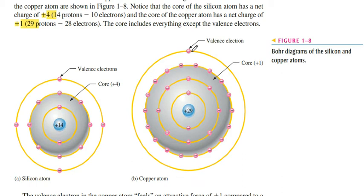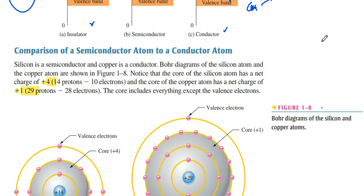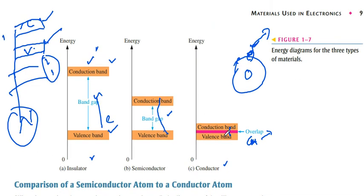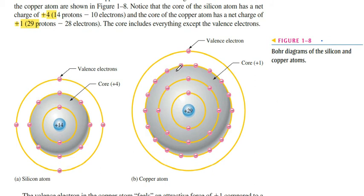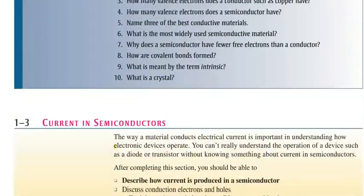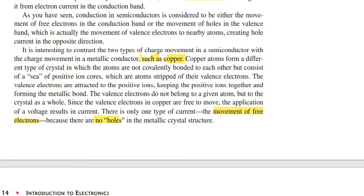In conductor materials, the valence band and conduction band overlap, so there is no energy needed, or only a very small amount of energy is needed, to jump from the valence band to the conduction band. The electrons move very freely. There is only one electron moving from the valence band to the conduction band, acting as electron current. There is no hole current in metals.